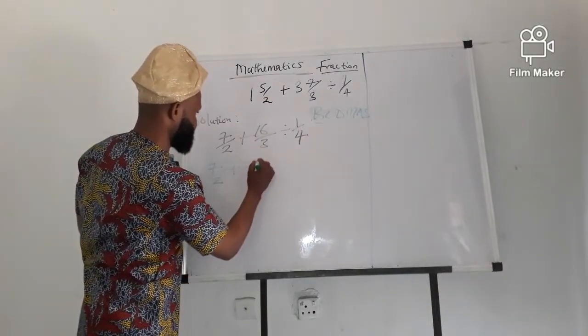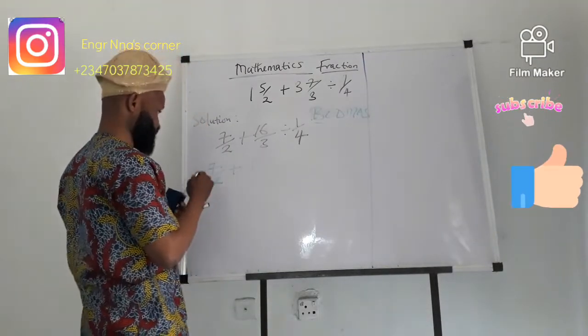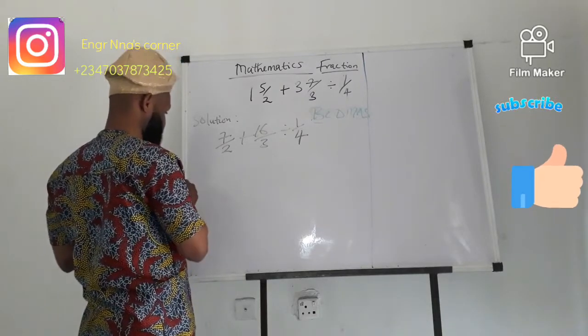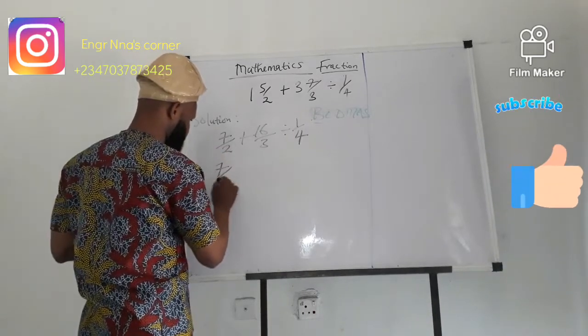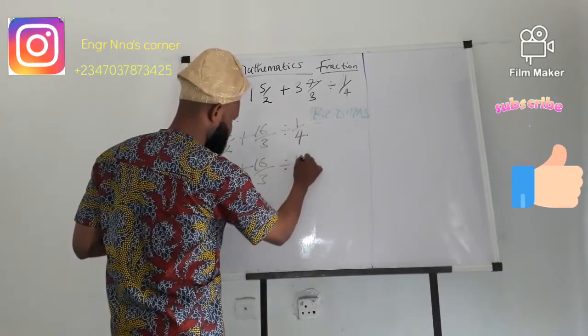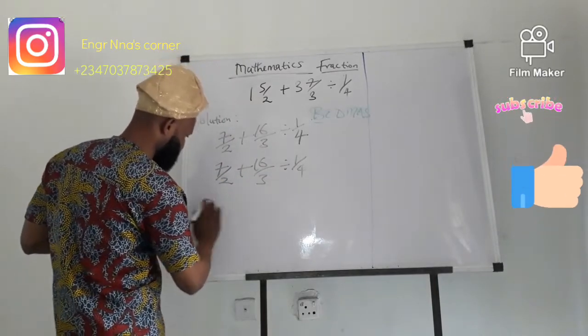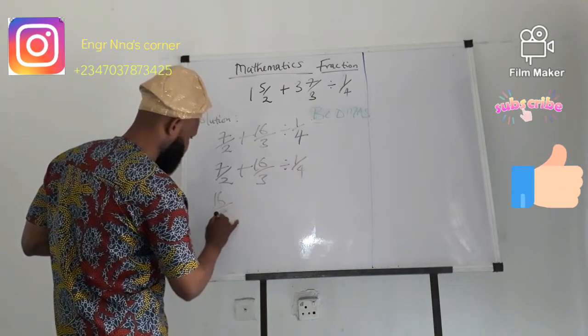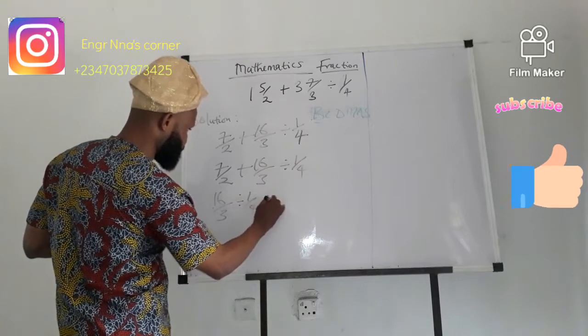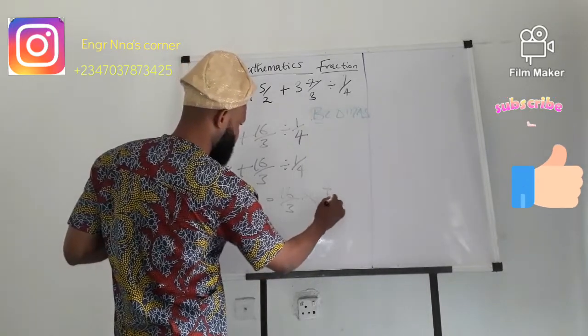So, division comes as the first operation before any other operation. So, we say 16 over 3 divided by 1 over 4 would give us 16 over 3 times 4 over 1.